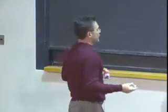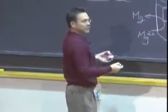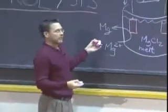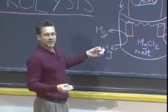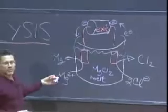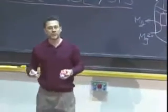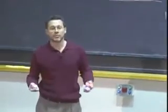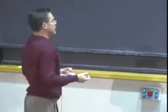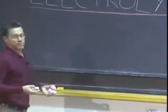That is an electrolysis reaction in which something that doesn't want to happen, namely the reduction of magnesium two-plus to magnesium zero by chloride ions, that is non-spontaneous. And we are forcing it to happen by applying this external potential. And just how great must that external potential be?